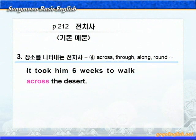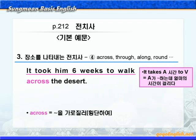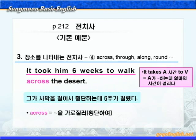계속해서 장소를 나타내는 전치사 across, through, along, round, around, about에 대해서 살펴보겠습니다. 기본 예문 동그라미 4번이에요. across는 '뭐뭐를 가로질러'라는 뜻이니까, walk across하면 '가로질러 걸어가다' 혹은 '횡단하다'라는 말입니다. 여기서 it takes a 시간 to부정사는 '~하는데 얼마의 시간이 걸리다'는 뜻이죠. '그가 사막을 걸어서 횡단하는데 육 주가 걸렸다'가 됩니다.